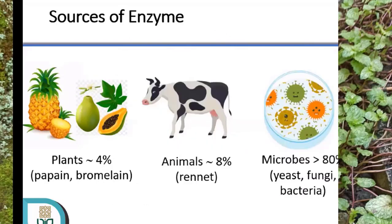Sebenarnya sumber-sumber enzim itu apa saja? Yang pertama enzim bisa diperoleh dari tanaman. Contoh yang sangat kita kenal misalnya dari nanas ada bromelain, dan dari pepaya ada papain. Apalagi sebentar lagi kita mau Idul Adha, enzim papain ini fungsinya sebagai protease dan bisa digunakan untuk mengempukan daging. Makanya biasanya ibu-ibu kalau dapat daging ketika Idul Adha langsung dilumuri dengan daun pepaya yang dihancurkan, karena kita menginginkan getahnya — jadi enzimnya ada dalam getahnya.